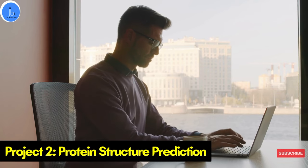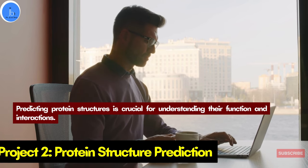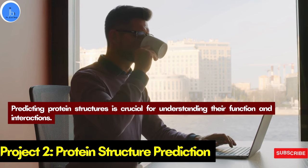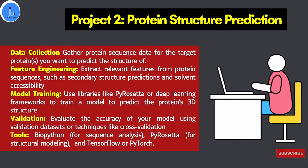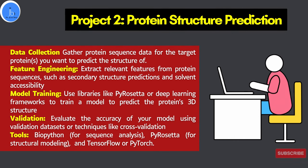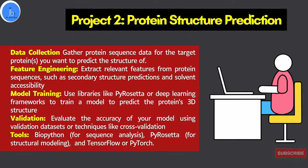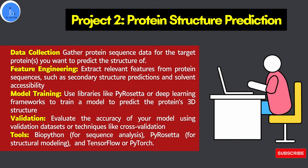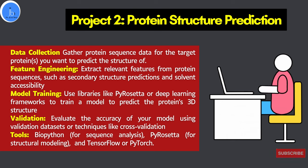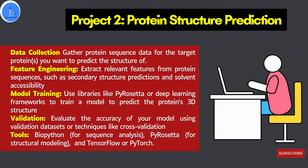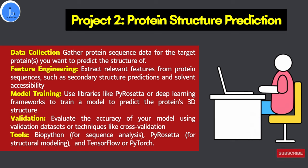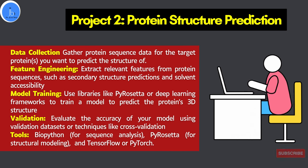Project two is protein structure prediction. Predicting protein structure is a crucial part of understanding their functions and interactions. Required tools include BioPython, PyRosetta, and deep learning libraries like PyTorch. The roadmap includes: first, data collection — gather protein sequence data for target proteins. Then feature engineering — extract relevant features from protein sequences such as secondary structure prediction and solvent accessibility. Next, model training — use libraries like PyRosetta or deep learning frameworks to train a model to predict the protein's 3D structure. Finally, validation — evaluate the accuracy of your model using validation datasets or techniques like cross-validation.